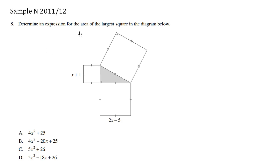Determine an expression for the area of the largest square in the diagram below. We want to find the area of this large square here. Now, to find the area of a square, it's going to be a side times a side, or length times length, or width times width, whatever you want to call it.